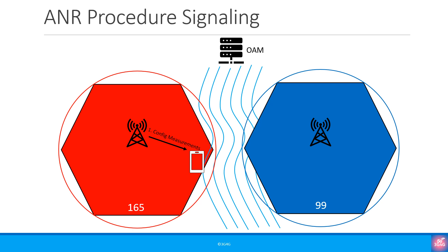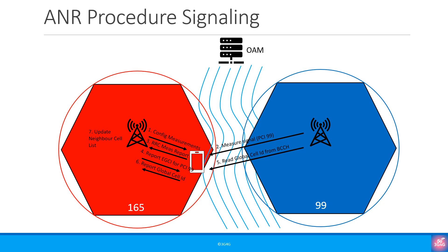The base station will configure measurements in the UE. The UE starts measuring the neighbors. The UE sends a measurement report back to the serving cell using the physical cell ID to identify different E-UTRAN cells. Here the UE includes the measurements of the cell with physical cell ID 99 as a detected cell. The base station receives the report and instructs the UE to report the global cell ID for the cell with PCI 99. The UE gets the global cell ID by reading the BCCH or broadcast control channel of the detected cell, and then it reports the global cell ID to the serving cell. The serving cell updates the neighbor cell list.